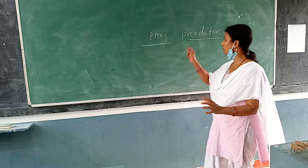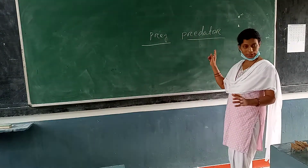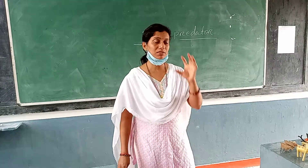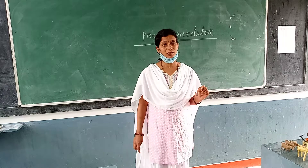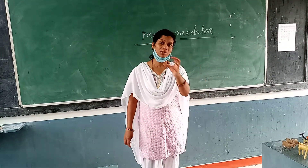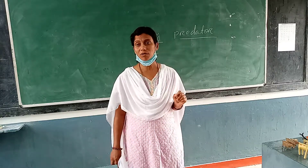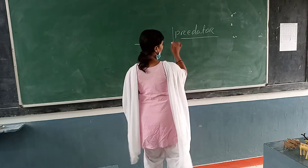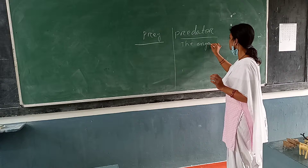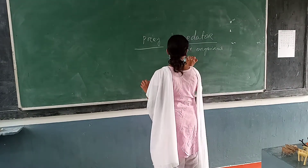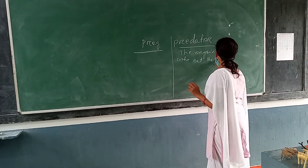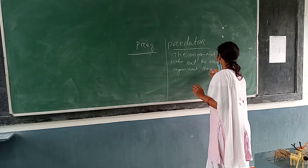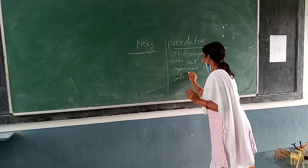Today we will discuss only prey and predator — what is prey and what is predator. In the grassland, the lion eats the deer, but it's not only the lion. The tiger also eats the deer, the zebra, the cow, the goat, and different animals. So the organisms that eat other organisms are called predators. The predator is the organism that eats other organisms. Examples of predators include lion and tiger.